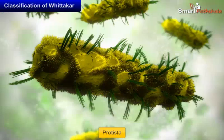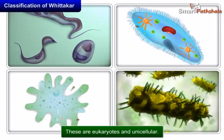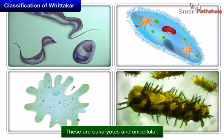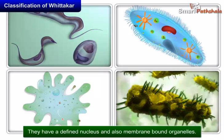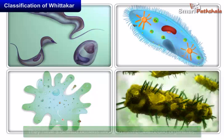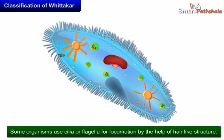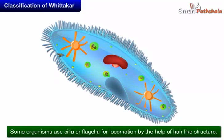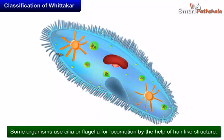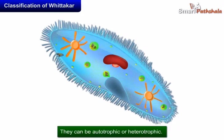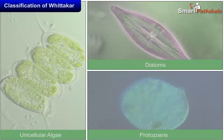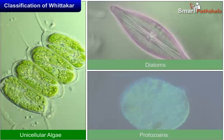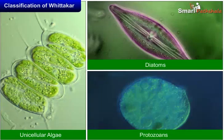2. Protista. These are eukaryotes and unicellular. They have a defined nucleus and also membrane-bound organelles. Some organisms use cilia or flagella for locomotion by the help of hair-like structures. They can be autotrophic or heterotrophic. Examples: unicellular algae, diatoms, and protozoans.